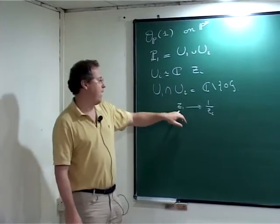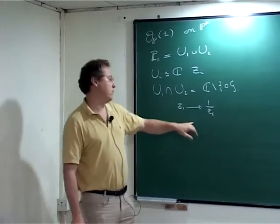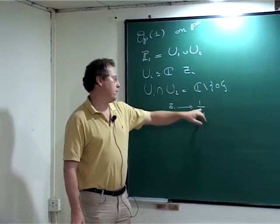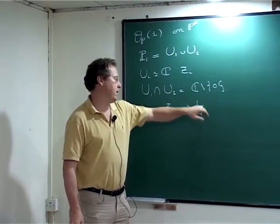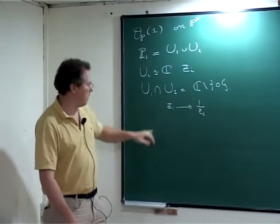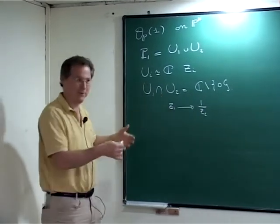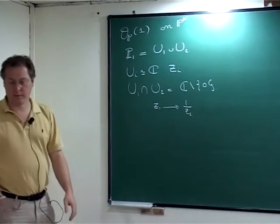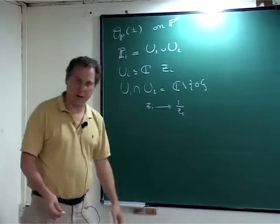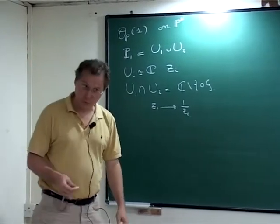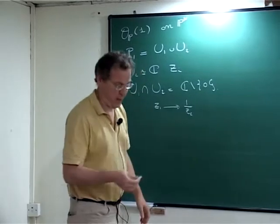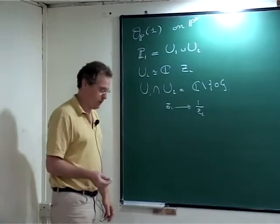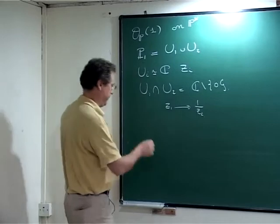You will have Z_i equal to 1 over Z_j. Anyway, if you cannot do the exercise on P^N, try to do P2, and then P^N should work. And if you cannot, just tell me, I will do it.